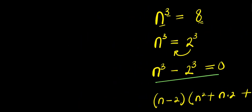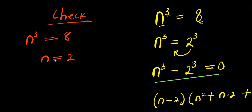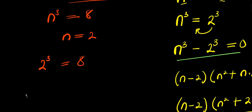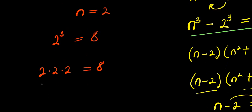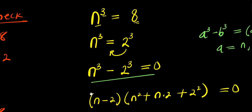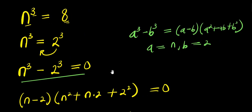We can check: with n³ = 8 and n equals 2, we get 2³ equals 2 times 2 times 2 equals 4 times 2 equals 8. That satisfies the equation. This is how we solve it — two complex solutions and one real solution, making three solutions in total because we have power 3. Thank you and goodbye!